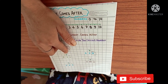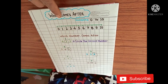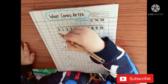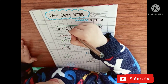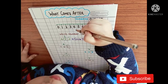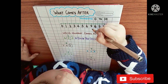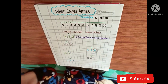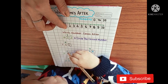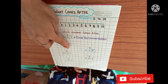Which number is this? 8. What comes after 6? 7. You have to read this line first. Okay, read it. 8, 9. 10. 9. 10. Make a circle on the number 7. What comes after 6? 7.